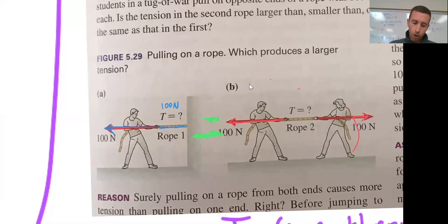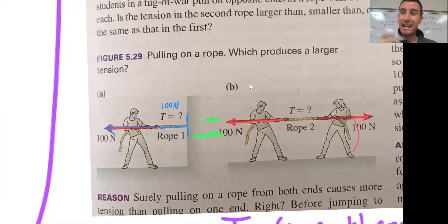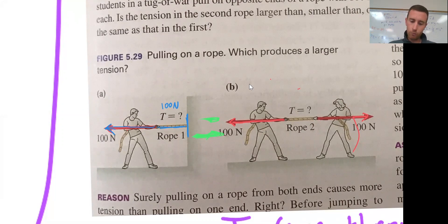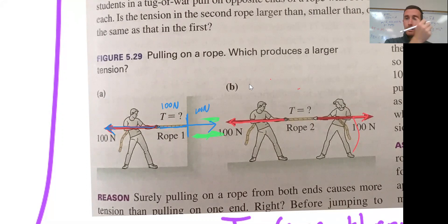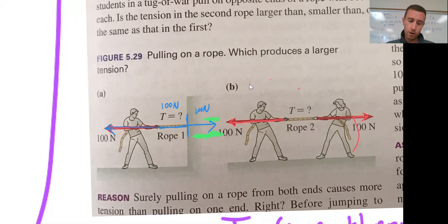Remember, every force has an equal and opposite force — every action-reaction pair from Newton's Third Law. So if he's pulling this way with 100 Newtons, the wall is pulling back with 100 Newtons. He's got 100 Newtons pulling that way and 100 Newtons pulling that way, and that gives a tension force of 100 Newtons. That's the tension all the way along the rope — 100 Newtons.